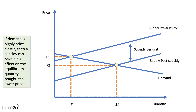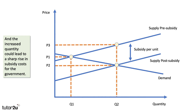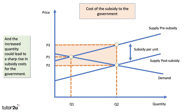Compare that with when demand is much more price sensitive — more price elastic. Again, for the same subsidy, the price comes down from P1 to P2 and it has quite a big effect on the equilibrium quantity. If demand is highly price sensitive, it only takes a relatively small change in price from P1 to P2 for the quantity to increase quite substantially. Developing the analysis further, you want to show how much the government spends on the subsidy: the consumer pays P2, the producer gets P3, and that vertical distance is the subsidy per unit — giving you the total cost of the subsidy.